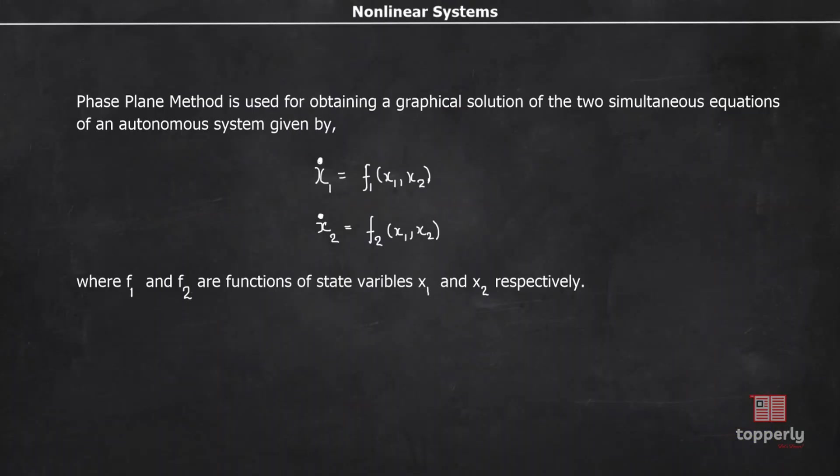Now, defining mathematically, phase plane method is used for obtaining a graphical solution for the two simultaneous equations of an autonomous system given by x1 dot equal to f1 of x1 x2, x2 dot equal to f2 of x1 x2, where f1 and f2 are functions of state variables x1 and x2 respectively.